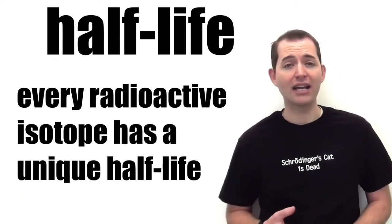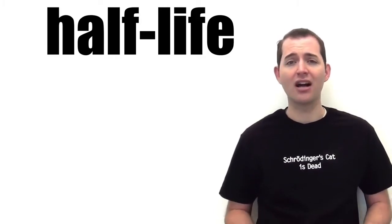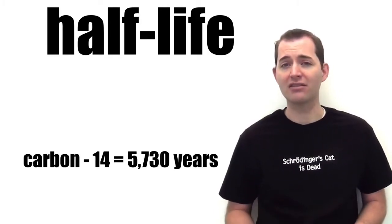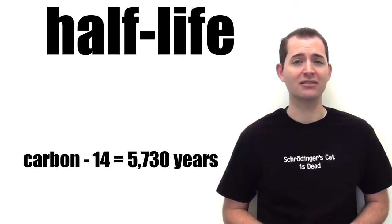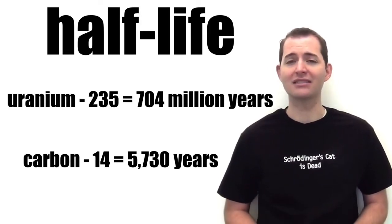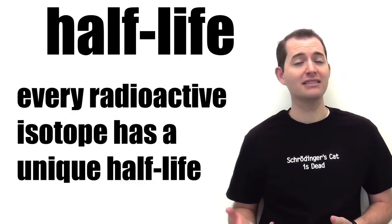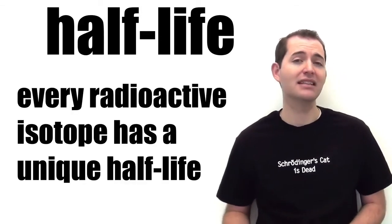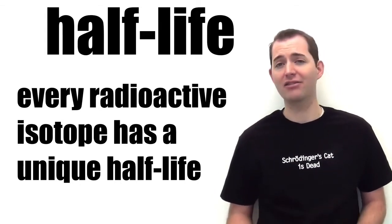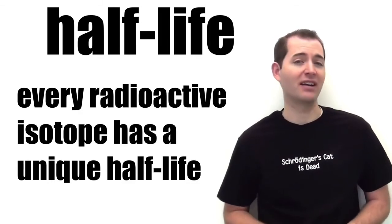Every radioactive isotope has a specific half-life. For example, carbon-14 has a half-life of about 5,730 years, while uranium-235 has a half-life of about 704 million years. From these examples, we can see that the length of time of a half-life between elements can vary greatly, and it is dependent upon the specific isotope.